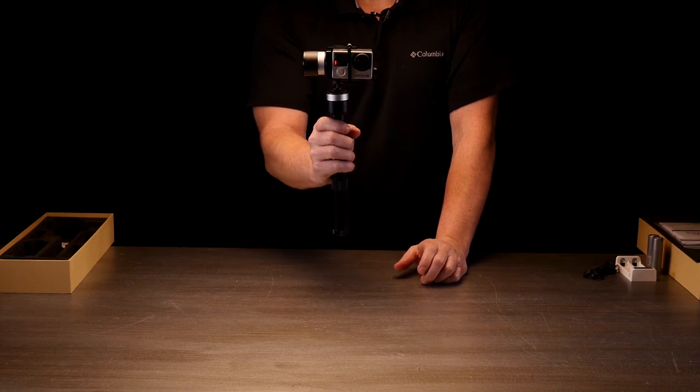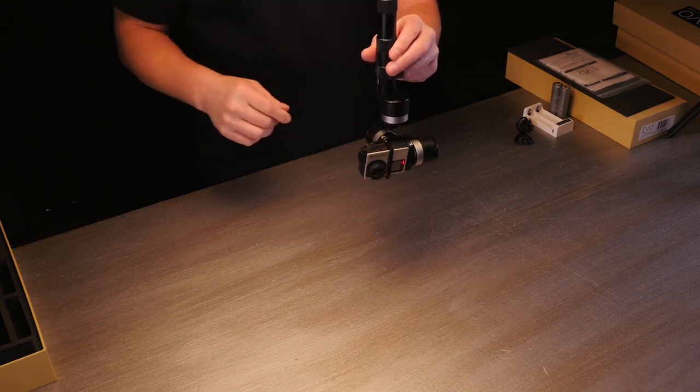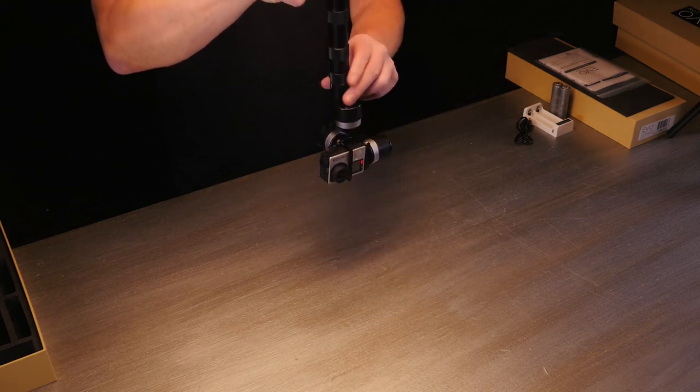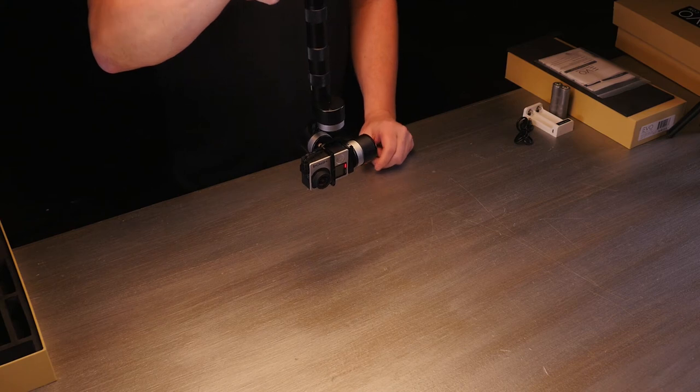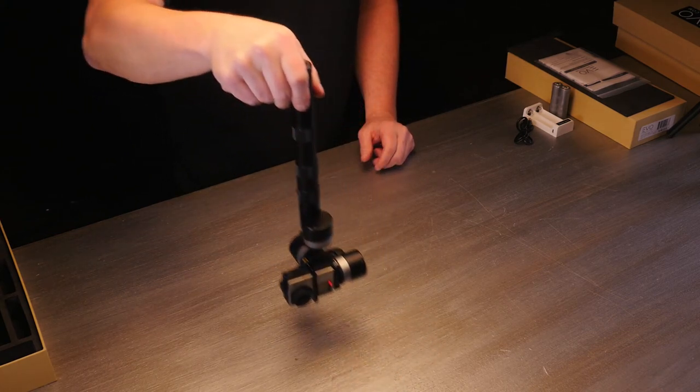Also, when you're in this mode two, in the heading pitch and follow mode, if you were to go ahead and just tip the whole thing over, you can use this in the upside down mode which is really nice too. So if you are needing to get really low shots to the ground, you can do that.